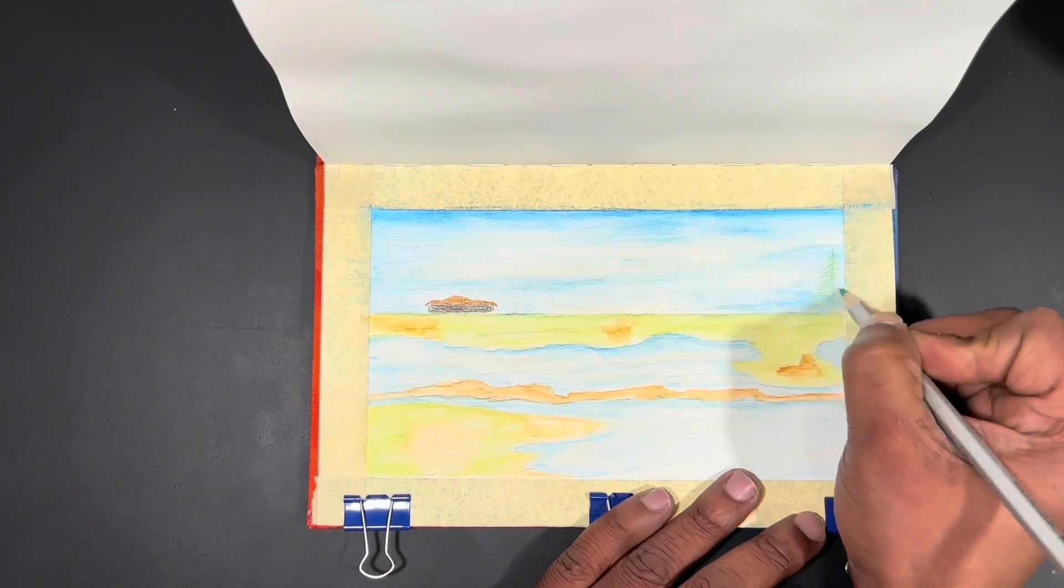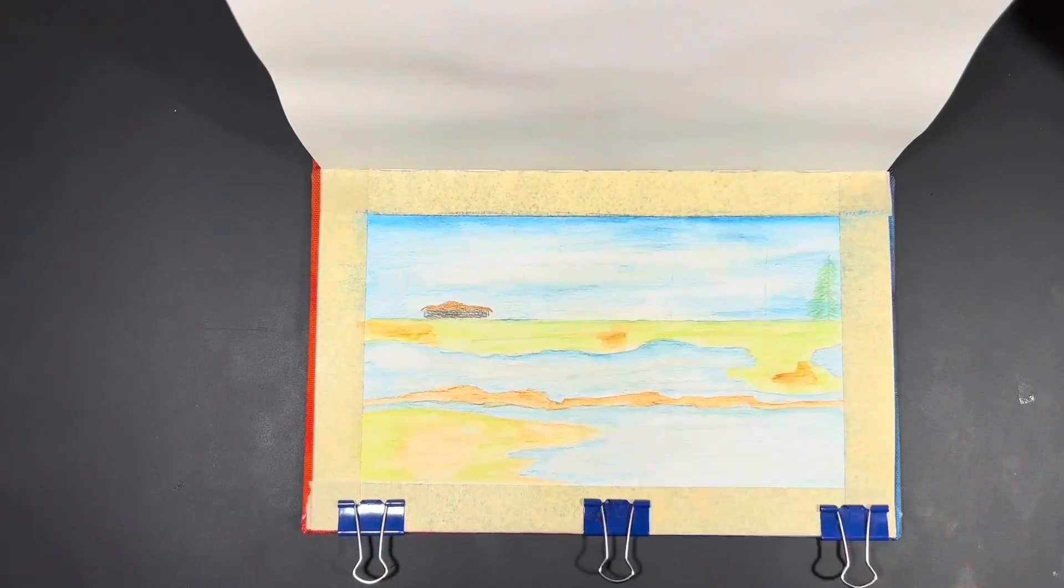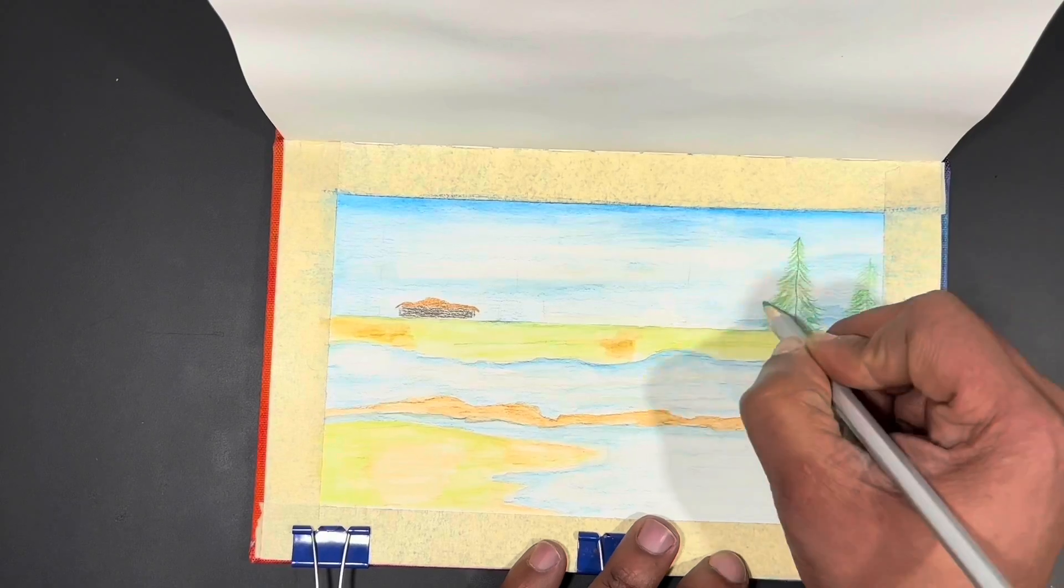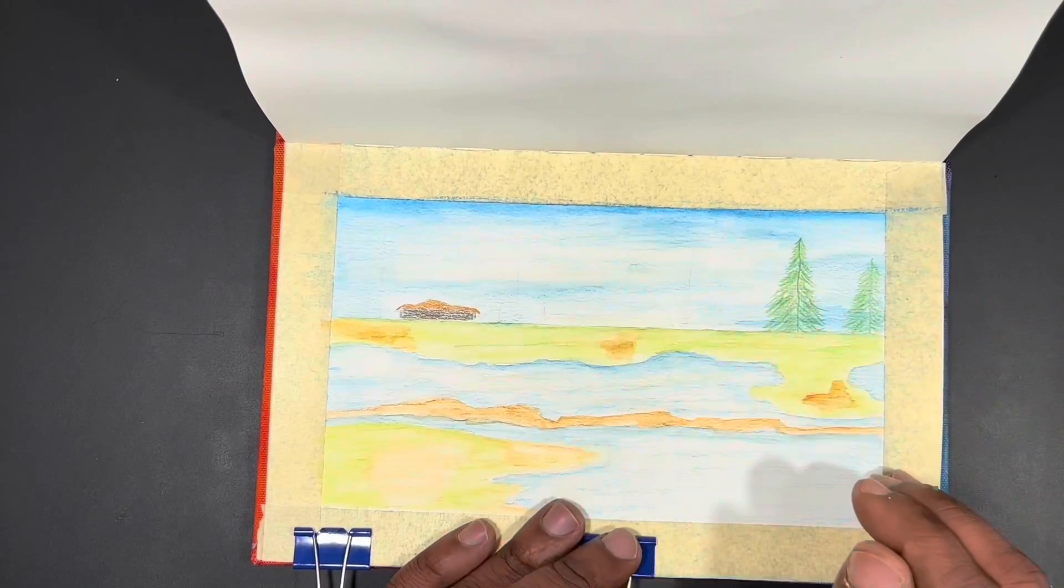The yellow ochre color and the burnt sienna color were used to kind of emulate some little land patches. And then of course there is the entire land strip that is going across the foreground that's dividing the two ponds from each other.